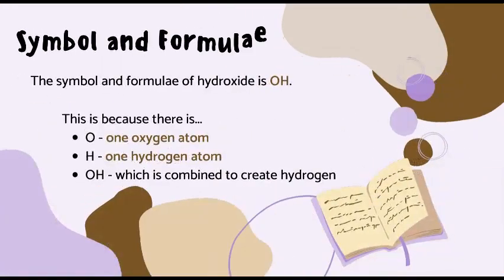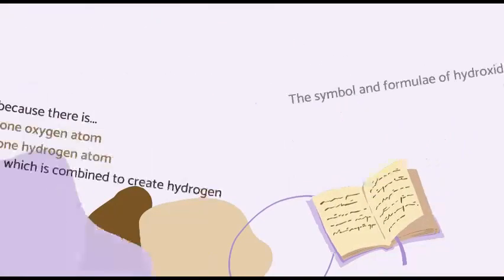The symbol for hydroxide is OH. This is because there is one oxygen atom, which is represented by O, and one hydrogen atom, which is represented by H. And now they are combined to make hydroxide: OH.